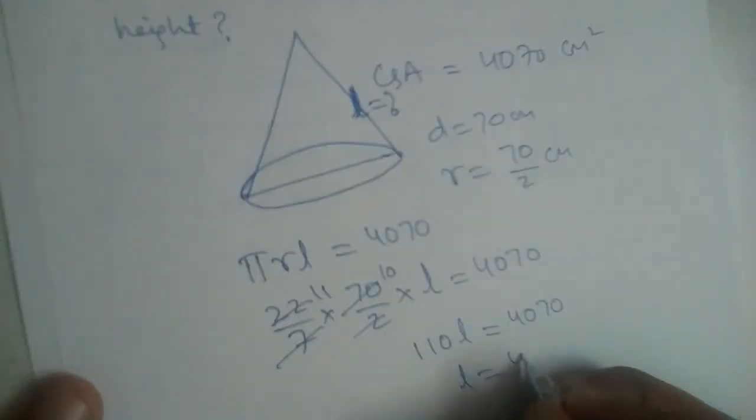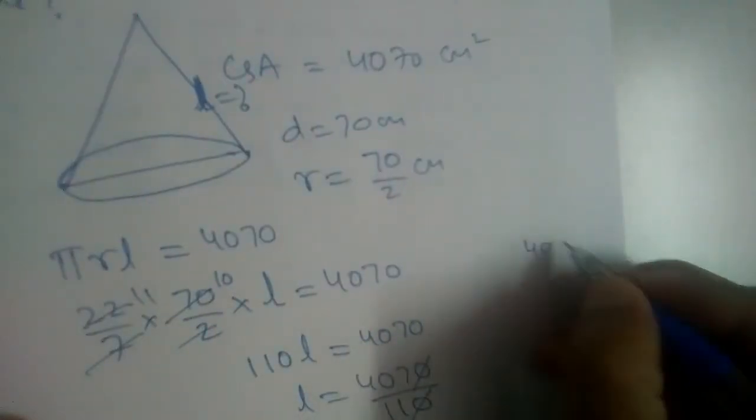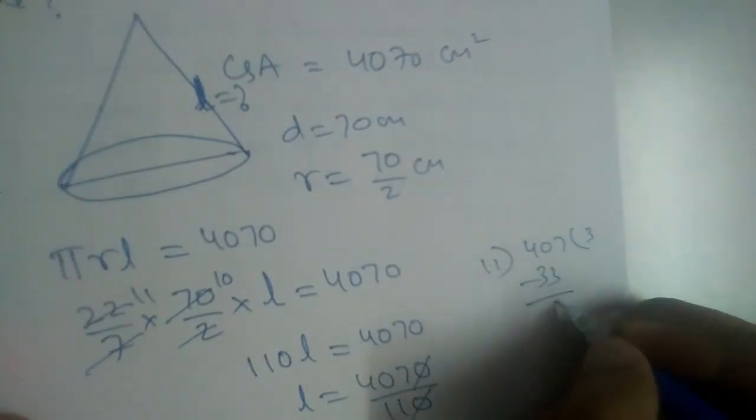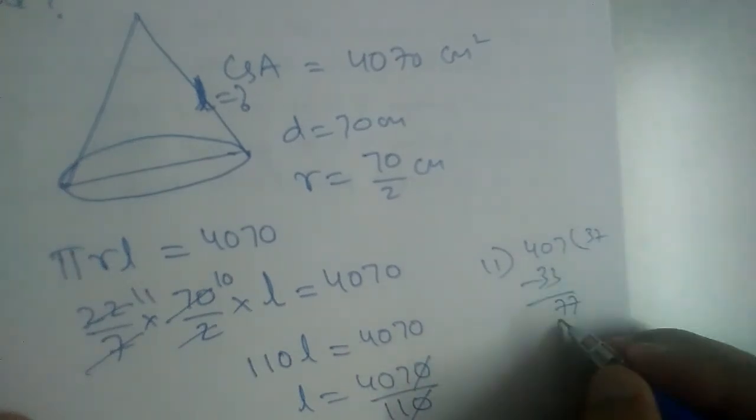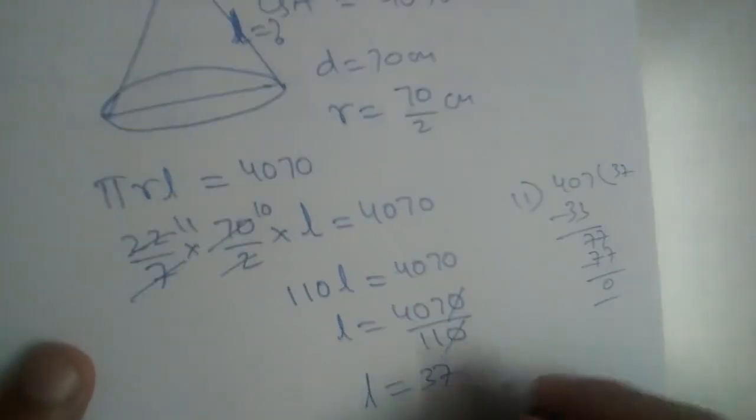So l will be 4070 divided by 110. Cancel the zeros: 407 divided by 11. 11 times 3 is 33, subtract to get 77. 11 times 7 is 77. So it equals 37.